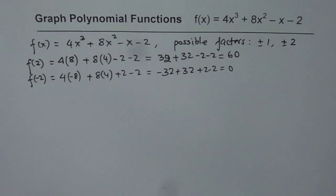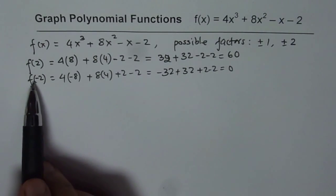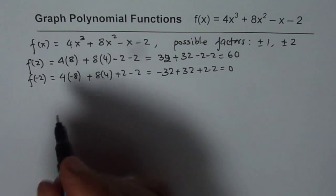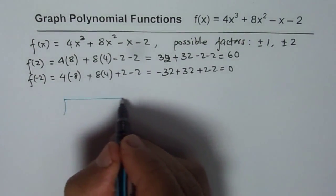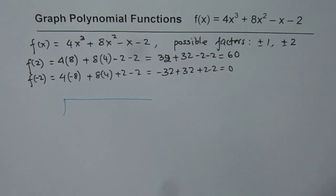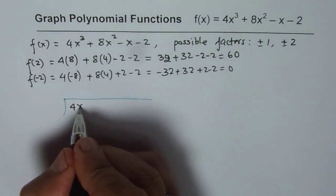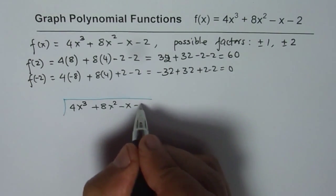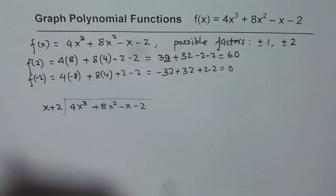Once we get a 0, we can actually divide it by the factor. The factor at x equals to minus 2, we have a 0. So let's perform long division. The whole idea of this example is to review this process of division and then write down our factors and then sketch.